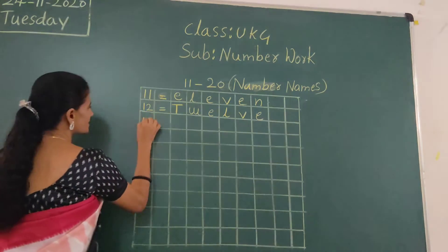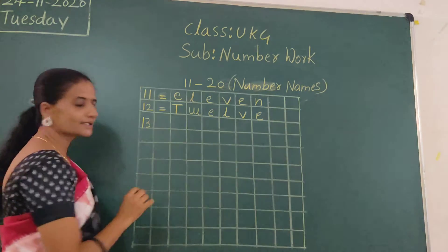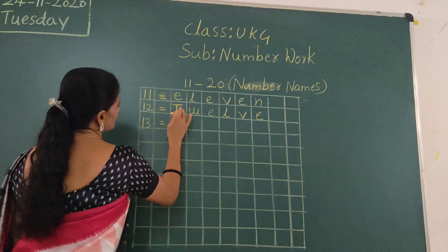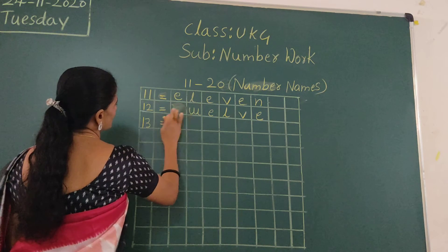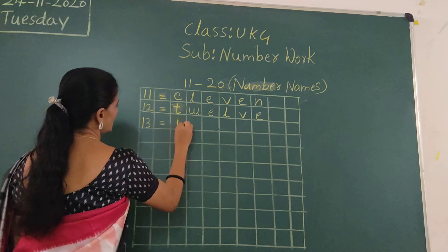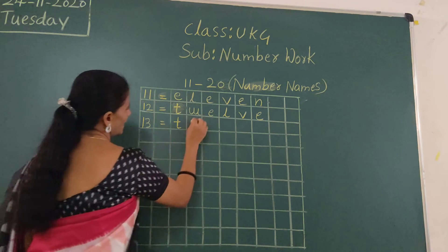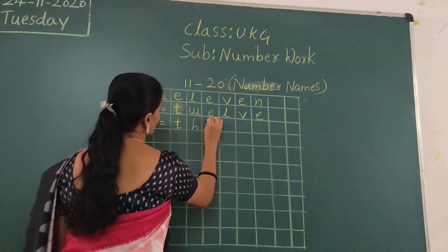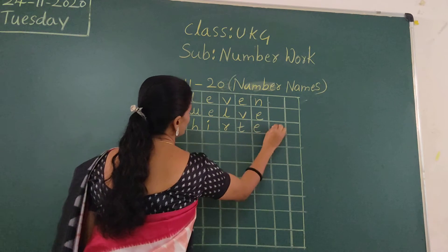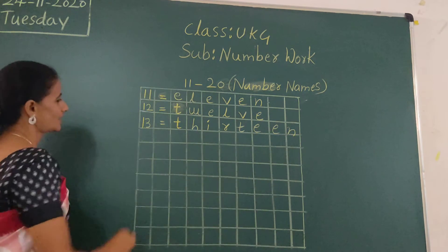13 — which number? 13 — 1, 3, 13. Small letter, all letters small letter only. T-H-I-R-T-E-E-N, 13.